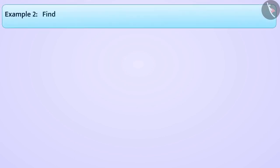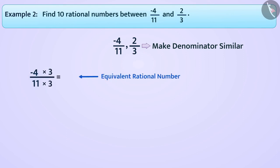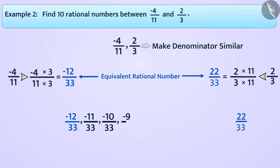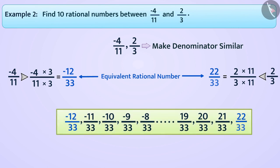Next example: find 10 rational numbers between minus 4 by 11 and 2 by 3. Let's solve this by reviewing each method. We will make the denominators of minus 4 by 11 and 2 by 3 the same. We multiply the numerator and denominator of minus 4 by 11 by 3 to get the equivalent rational number minus 12 by 33. Similarly, the equivalent rational number of 2 by 3 is 22 by 33. Now the rational numbers between minus 12 by 33 and 22 by 33 are minus 11 by 33, minus 10 by 33, minus 9 by 33, minus 8 by 33, and so on up to 21 by 33. Take any 10 rational numbers among these as your answer.